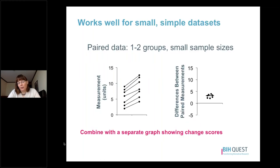Spaghetti plots work well for small, simple data sets. For example, if you have paired data with one to two groups and a small sample size, simply showing how each pair is connected and the two matching data points can be very valuable. You can also combine these with a separate graph showing the change scores for each group, which quickly gives you a sense of the distribution — whether all individuals are increasing, decreasing, staying the same, or showing a combination of different responses.